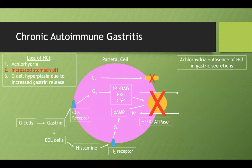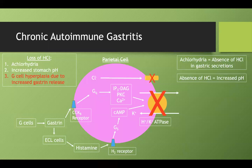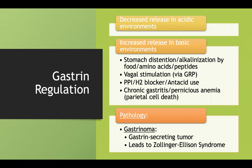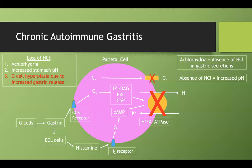Increased stomach pH should also make sense: if you're not producing acid in your lumen, your pH is going to go up and become more basic. The third consequence is G cell hyperplasia. If we go back to our gastrin regulation slide, when the lumen of the stomach gets basic, you increase your release of gastrin. So with chronic gastritis, our pH is increasing, feedback causes G cells to overproduce gastrin, and you get elevated gastrin and G cell hyperplasia.